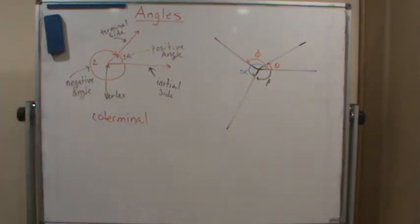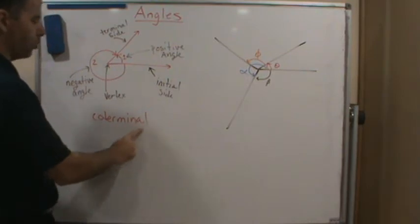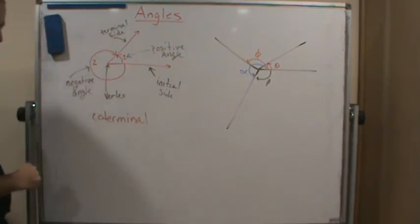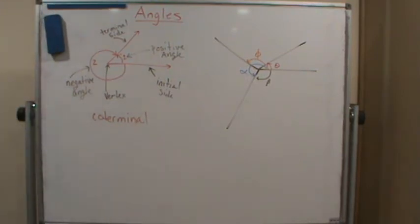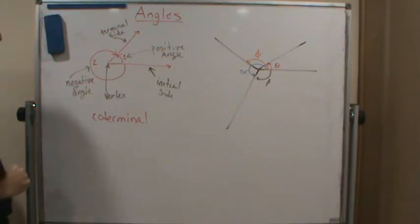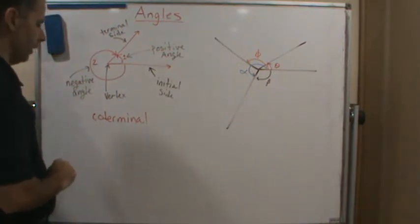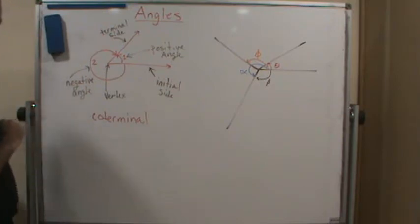If we talk about different angles that measure the same angle, we call those coterminal — which means they end at the same spot. We'll talk more about coterminal angles in a little bit.